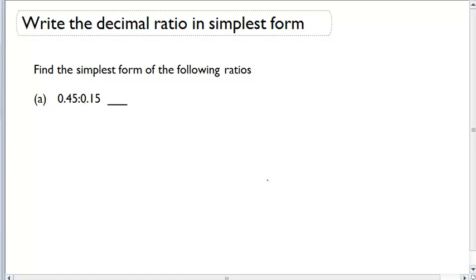So I have 0.45 to 0.15. I can see that both of these have two decimal places. If I multiply each of these by 100, so I'm going to multiply 0.45 times 100 and 0.15 times 100, that's going to give me a new ratio of 45 to 15.